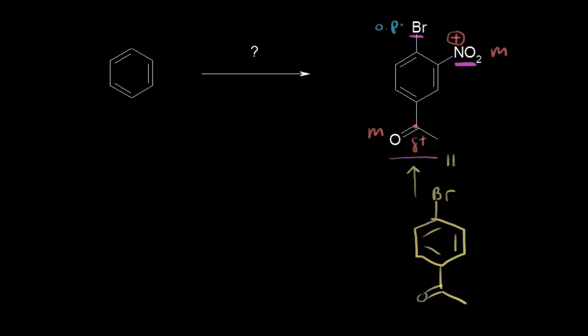Our last reaction was a nitration, so we add concentrated nitric acid and concentrated sulfuric acid. For the precursor to that molecule, we have an ortho-para-director and a meta-director on the ring. The bromine and the acyl group are para to each other, which means the ortho-para-director directed the acyl group to the para position as the major product.